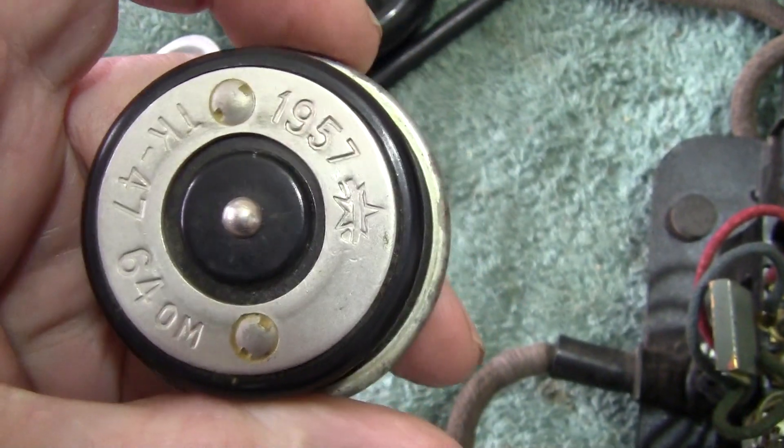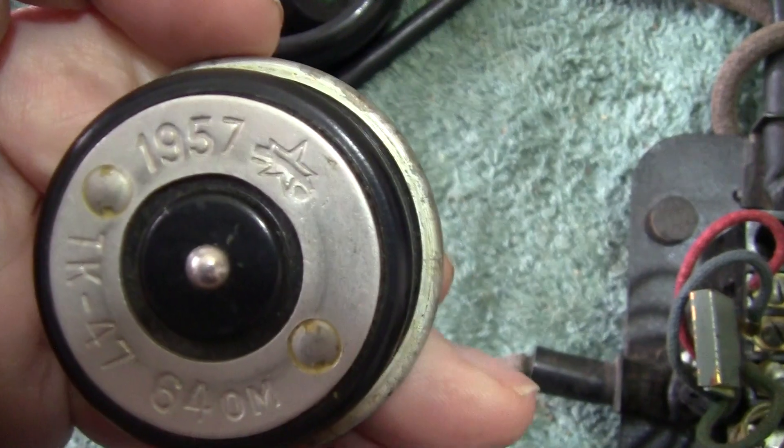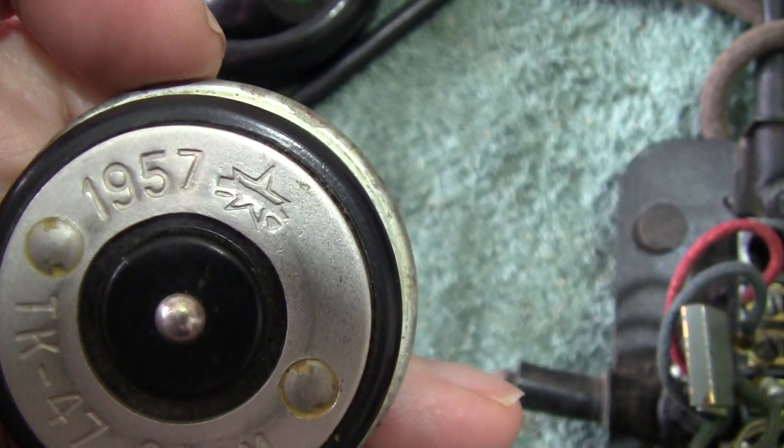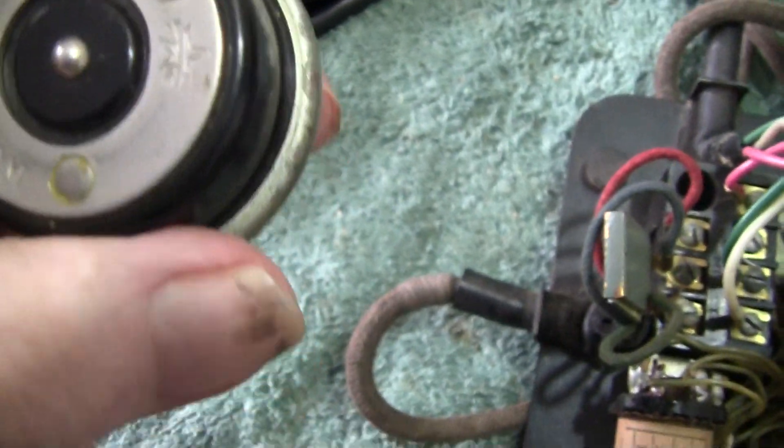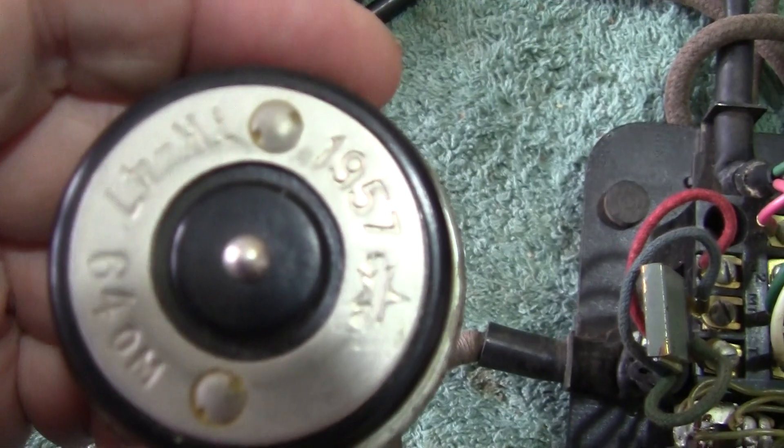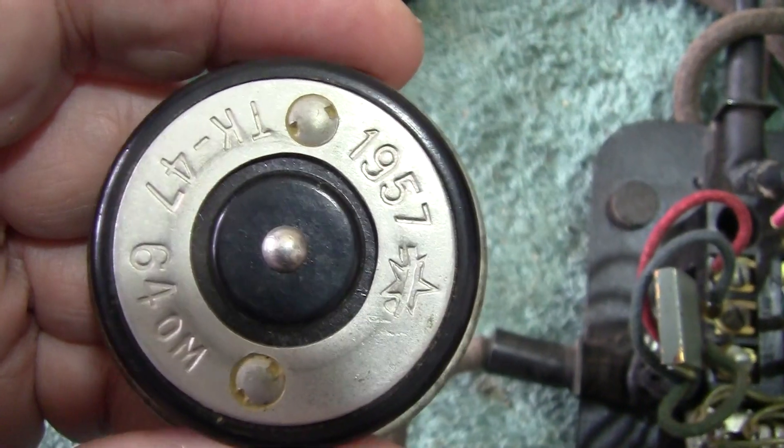Here we have the - same trademark again. 1957. So this is obviously the transmitter that came with the phone.